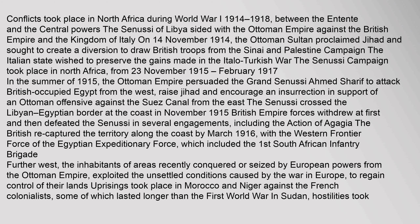Conflicts took place in North Africa during World War I (1914–1918), between the Entente and the Central Powers. The Senussi of Libya sided with the Ottoman Empire against the British Empire and the Kingdom of Italy. On 14 November 1914, the Ottoman sultan proclaimed jihad and sought to create a diversion to draw British troops from the Sinai and Palestine campaign. The Italian state wished to preserve the gains made in the Italo-Turkish War. The Senussi campaign took place in North Africa from 23 November 1915 to February 1917.